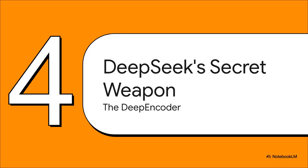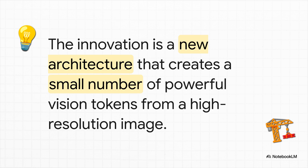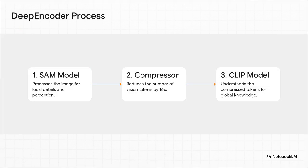So if these vision tokens are so information dense, how do you actually create them from a page of text in an efficient way? Well, that is where DeepSeek's secret weapon comes into play. A brand new architecture they built called the DeepEncoder. See, the real magic here isn't just someone saying, hey, let's use vision tokens. Lots of people have thought of that. The breakthrough is designing a system that can look at a super high-resolution image of text and intelligently squeeze it down into a very small number of these powerful vision tokens without losing all the meaning. And their process is just brilliant. It's got three steps.